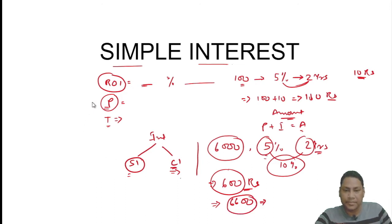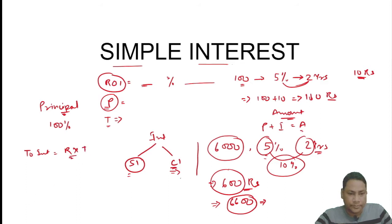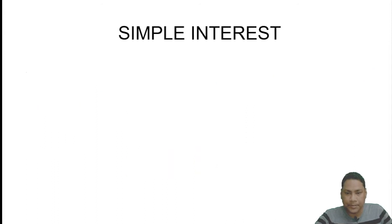From this we understand that the principal is 100 percent, and the total interest becomes rate of interest multiplied by time. Let us move to the next slide to discuss the formulas of simple interest.